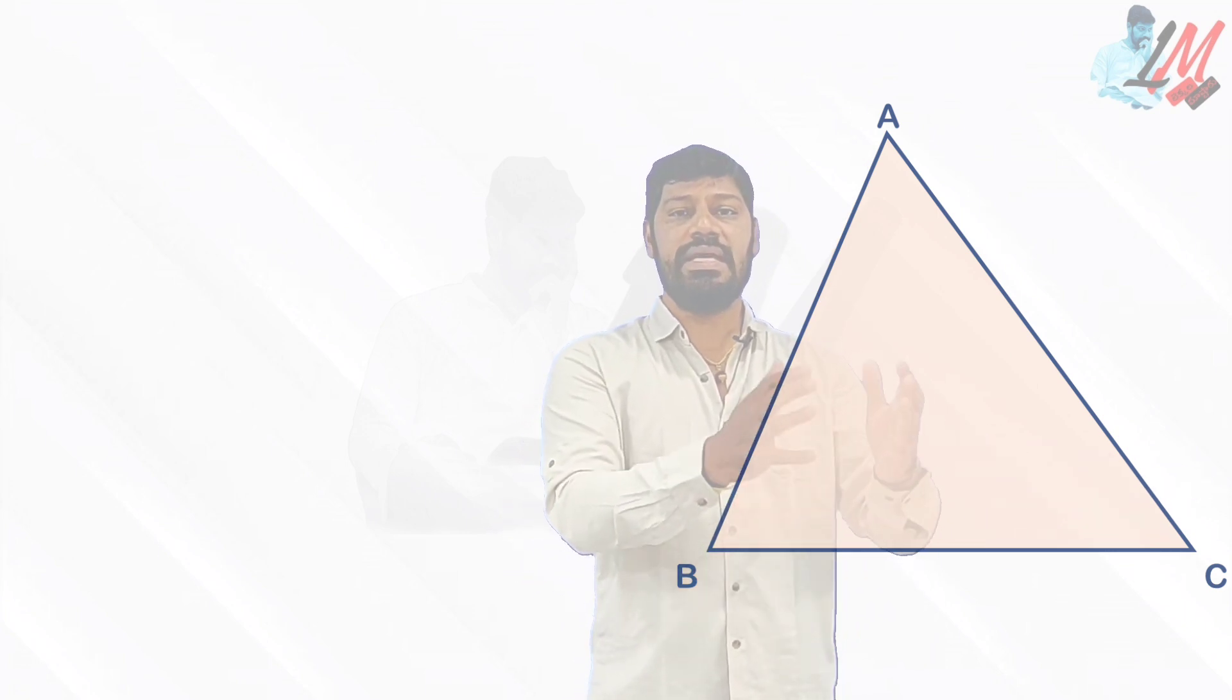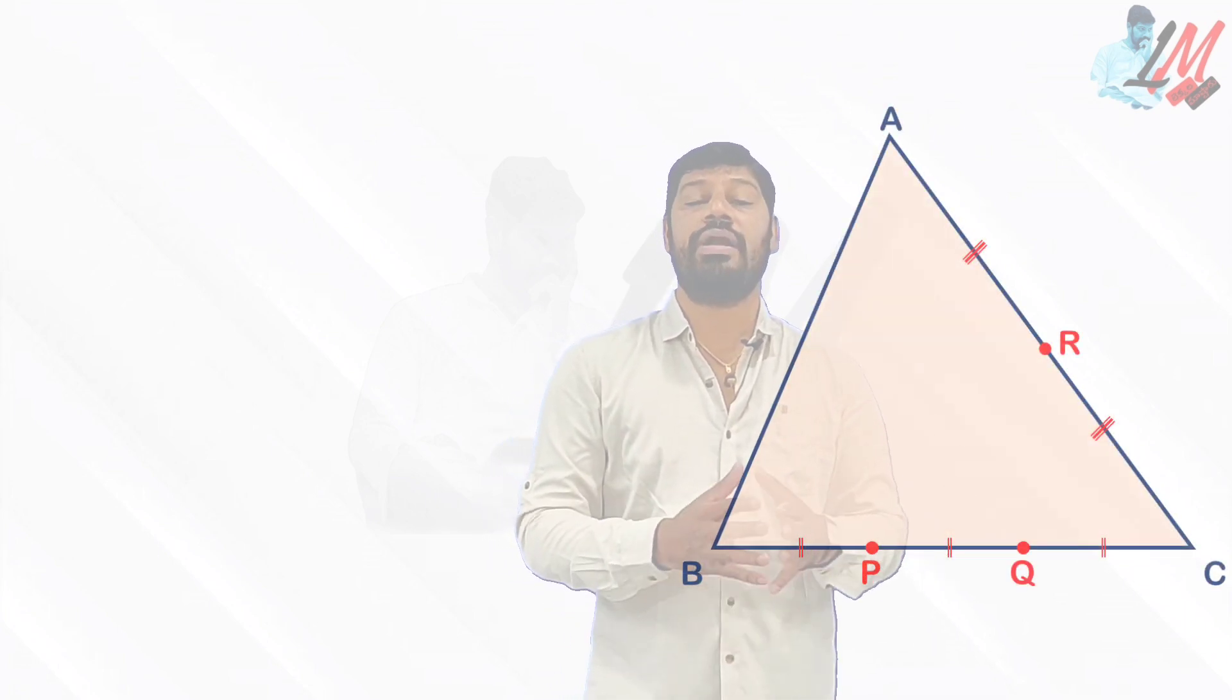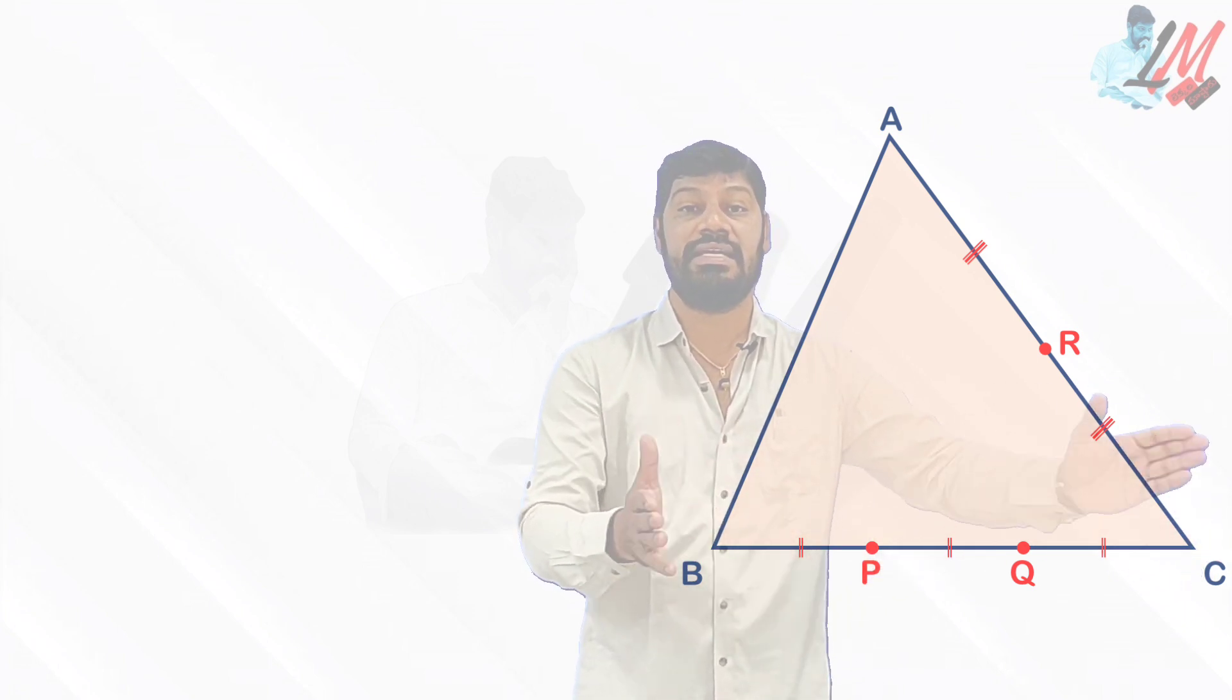Consider a triangle ABC. ABC is any arbitrary triangle. Now on BC two points P and Q were taken such that P and Q are going to trisect the side BC. What do you mean by trisecting? BP equal to PQ equal to QC. That is why P and Q will be considered as trisection points.